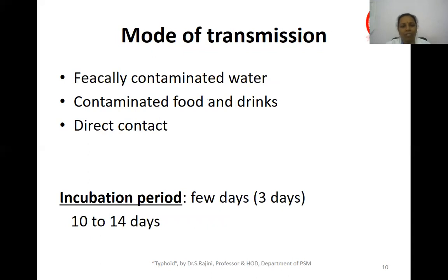Mode of transmission: mainly through fecally contaminated water and food. When flies sit on fecal matter and then come and sit on food particles, food gets contaminated. Transmission also occurs through direct contact via hands, nails, and fomites. The incubation period ranges from as few as 3 days and can last up to 10 to 14 days.